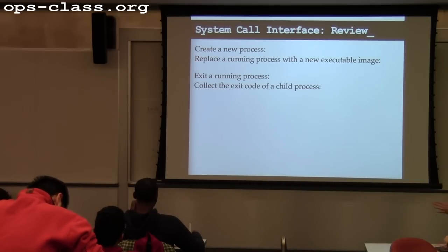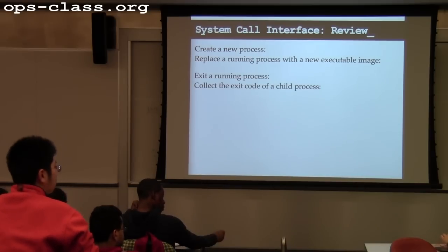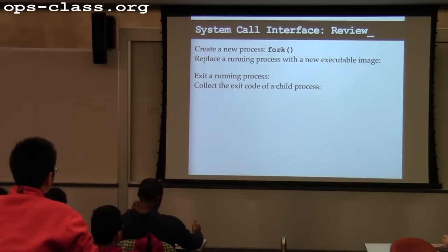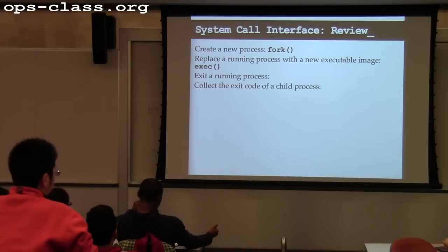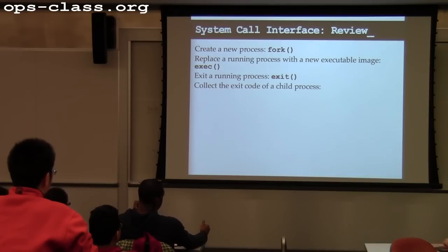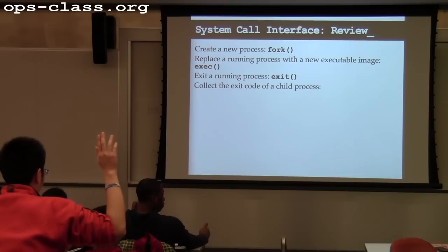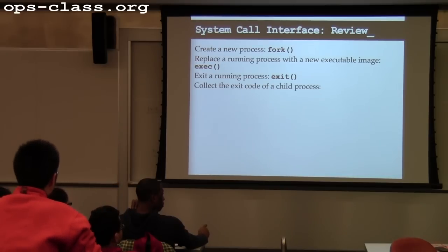How do I create a new process? Fork. How do I replace a running process with an executable image? Exec. What about exiting a running process? Exit. And how do I collect the exit code of a child? Wait.